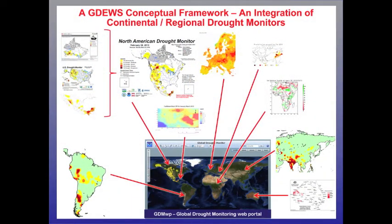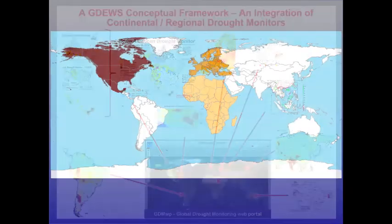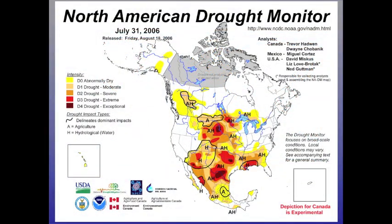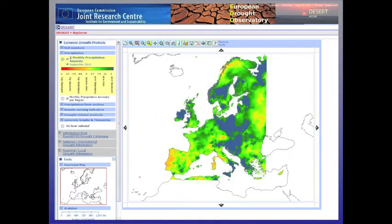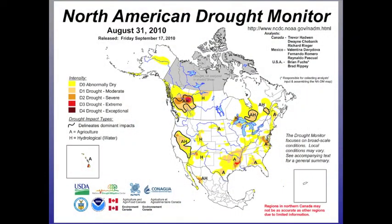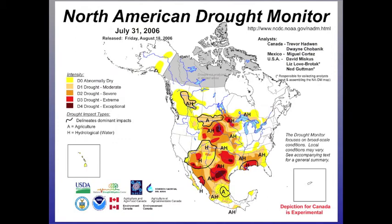Plans are in development to include more members to bring about global coverage. The current coverage is brought about by developing interoperability among the North American Drought Monitor, the European Drought Observatory, and the Princeton African Drought Monitor. As an early warning system, the Global Drought Monitor can provide increased lead time to warn for emerging drought issues like wildfires or crop failures.